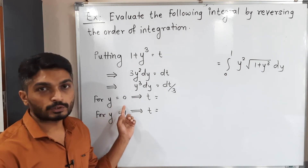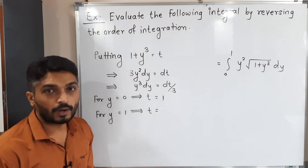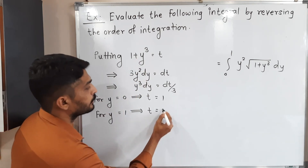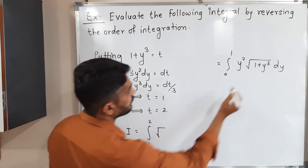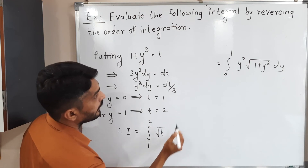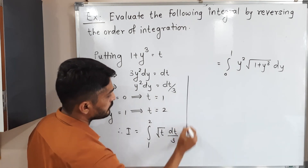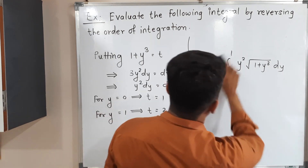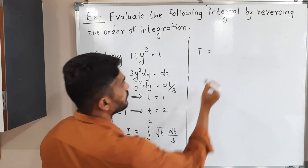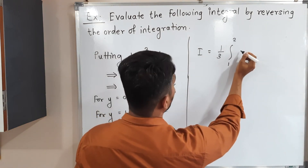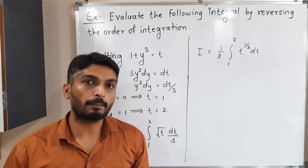Substituting, the integral becomes I = ∫₁² √t · (dt/3) = (1/3) ∫₁² t^(1/2) dt. Using the power rule — integration of t^n is t^(n+1)/(n+1) — we get (1/3) · [t^(3/2) / (3/2)] evaluated from 1 to 2, which simplifies to (2/9) · [t^(3/2)] from 1 to 2.